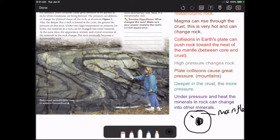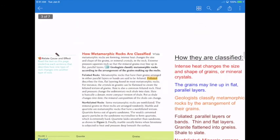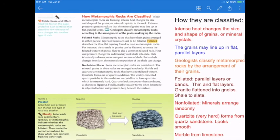Okay, so how are they classified? They're classified in a couple ways. Intense heat changes the size and shape of grains or the mineral crystals. Grains—that's really important. The grains may line up in flat parallel lines.